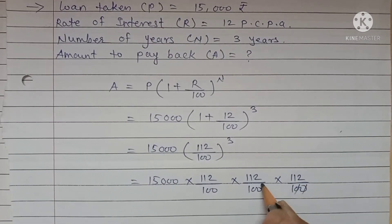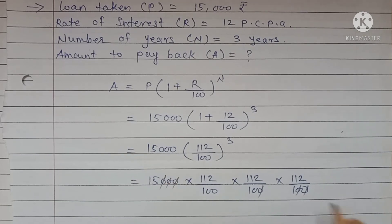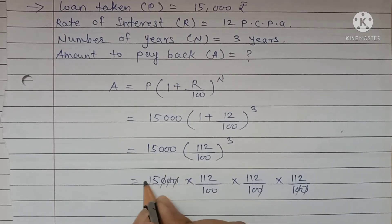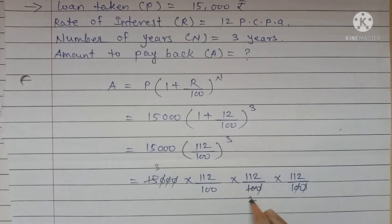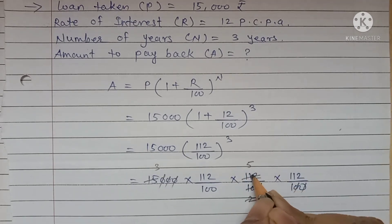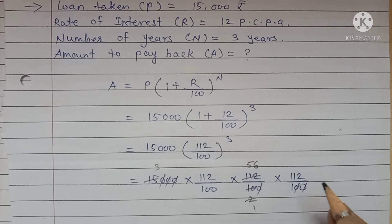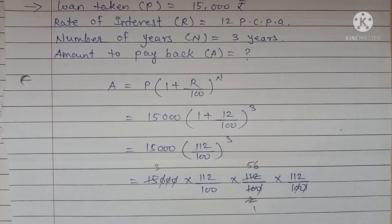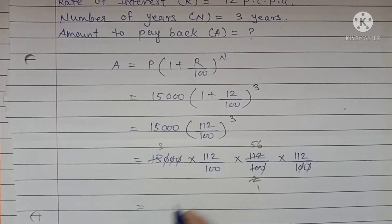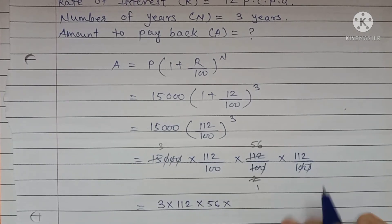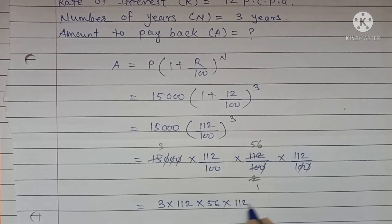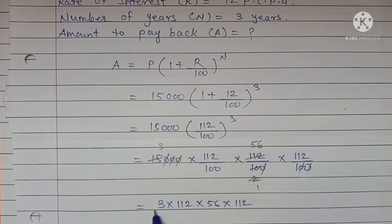15,000, 5 threes is 15, 5 twos is 10. 1 is remaining, 2 sixes is 12. Now what is remaining: 3 into 112 into 56 into 112 divided by 100.